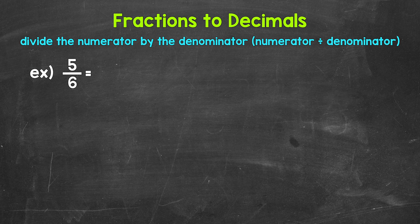When we convert a fraction to a decimal, we can do this by dividing the numerator — the top number of the fraction — by the denominator, the bottom number of the fraction. So for five sixths, we can set this up as five divided by six.